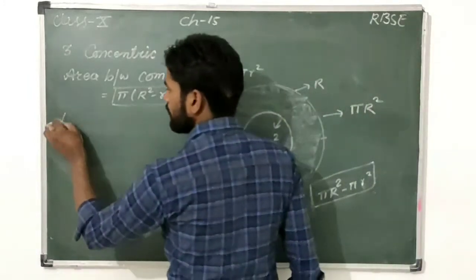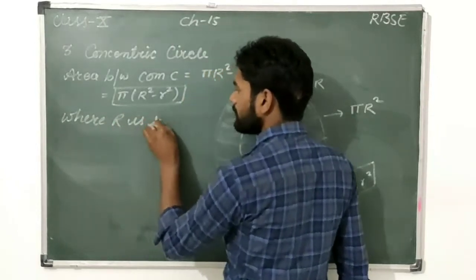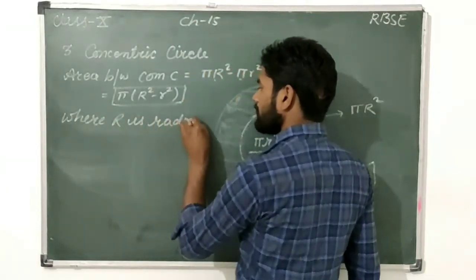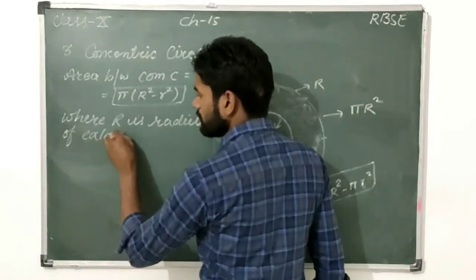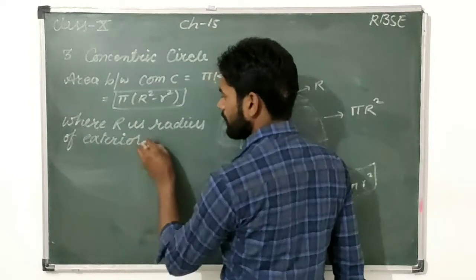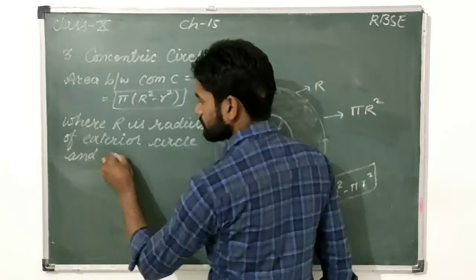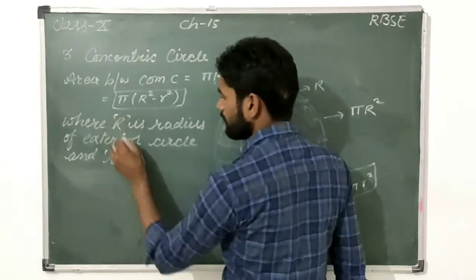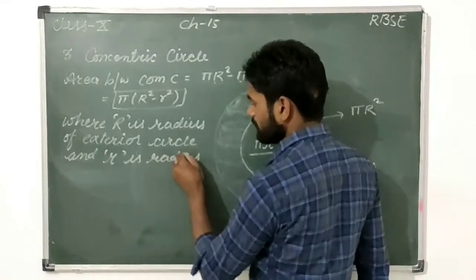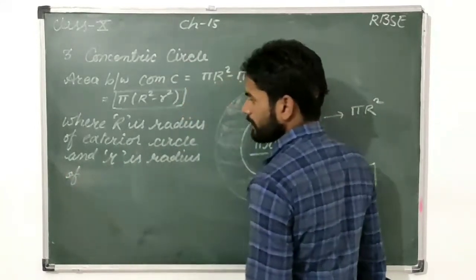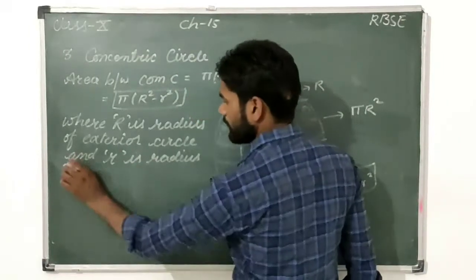In this formula, capital R is the radius of the exterior circle, and small r is the radius of the internal (inner) circle.